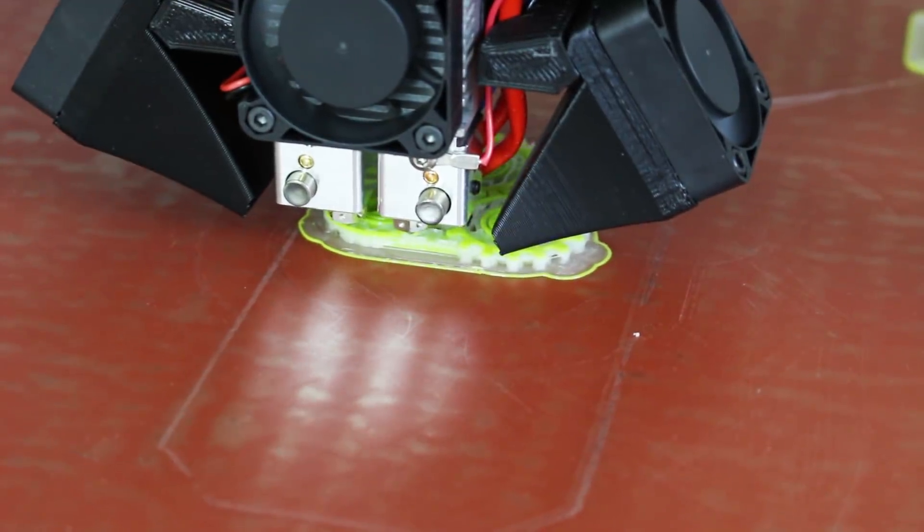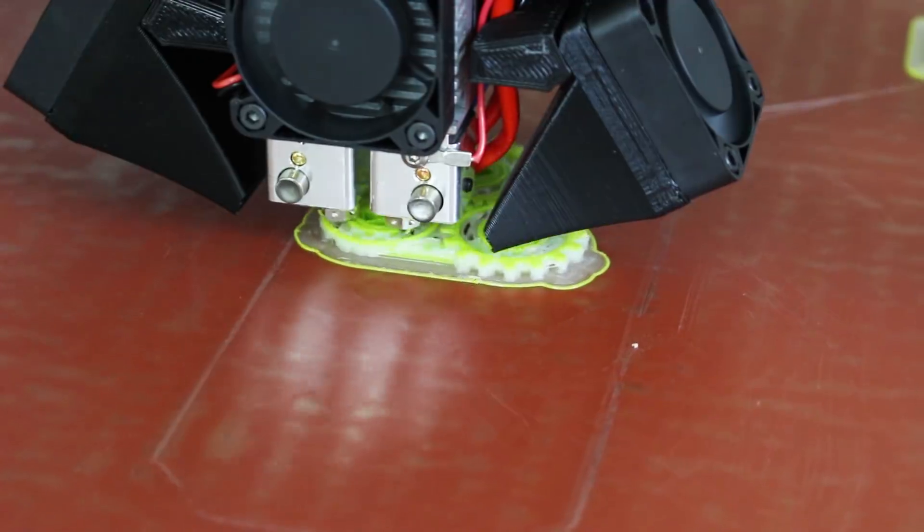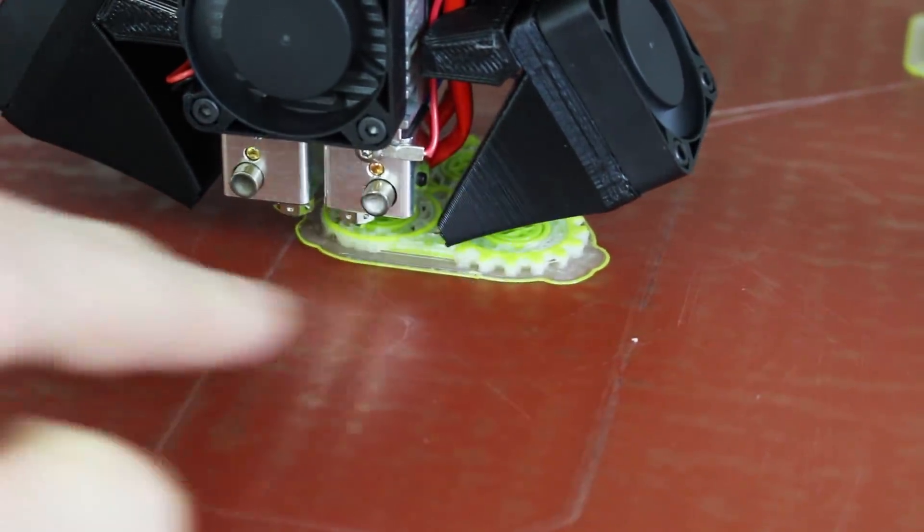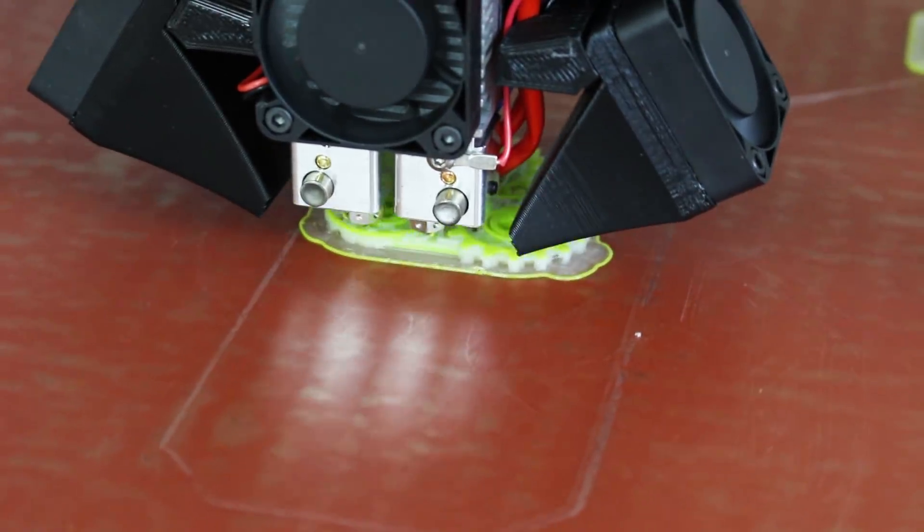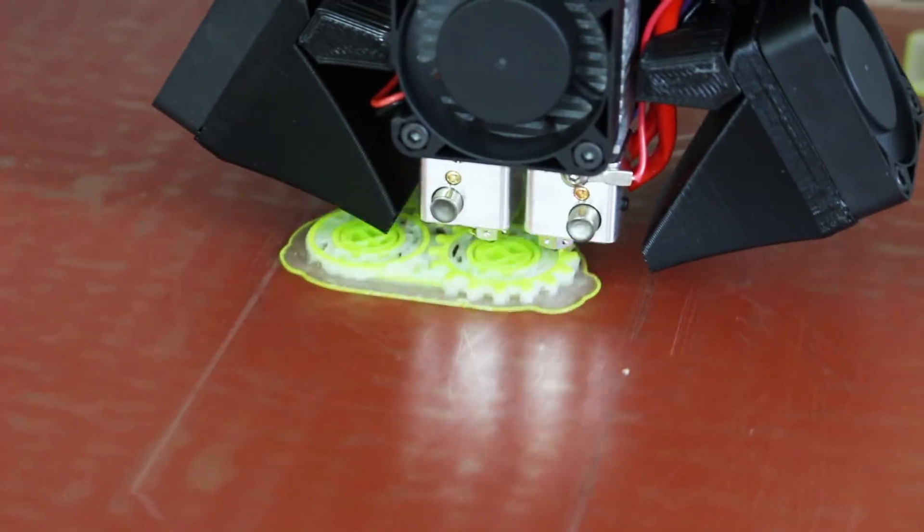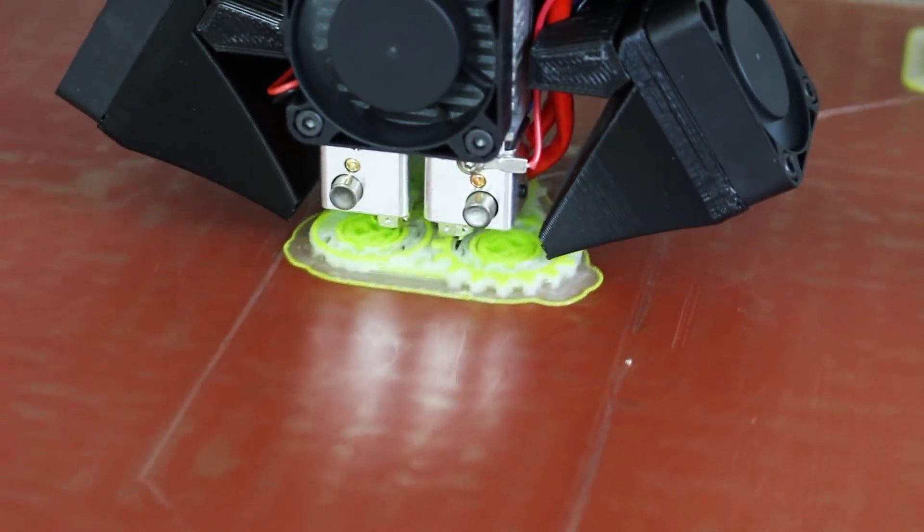So we're quite a bit further on in the print, and you can see the thing being built up there with the water-soluble support material in all the gaps. So we're about 49 minutes in, so it's a fairly long print. It's probably going to be three hours or something. So we'll come back at the end and see what it looks like.